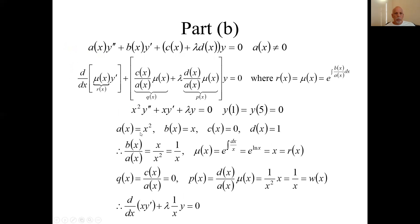A would be x². B would be x. C, there's no c, C is 0. D is just 1. So we have the A, B, C, and D. So now let's start going through this.